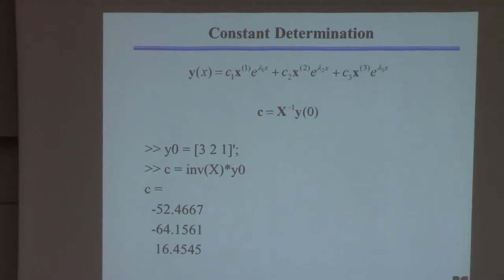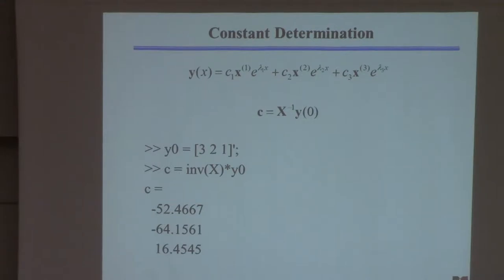You know the solution looks like this: Y of t is a sum of terms, each involving an exponential with one of the eigenvalues. Each term is multiplied by one of the eigenvectors — so each term on the right-hand side is a three-component column vector because of eigenvector X.